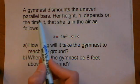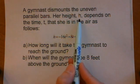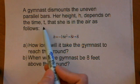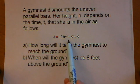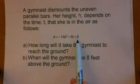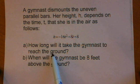A gymnast dismounts the uneven parallel bars. Her height h depends on the time t that she's in the air, as follows: h equals negative 16t squared plus 8t plus 8. Part A, how long will it take the gymnast to reach the ground? And Part B, when will the gymnast be 8 feet above the ground?